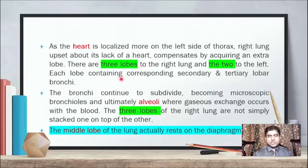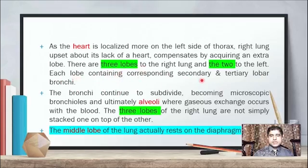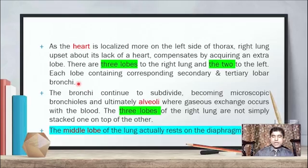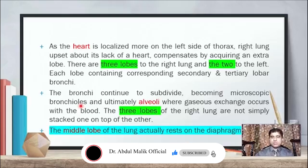There are three lobes to the right lung and two to the left. Each lobe contains corresponding secondary and tertiary lobar bronchi. The bronchi continue to subdivide, becoming microscopic bronchioles — as seen in histology — and ultimately convert into alveoli, where gas exchange occurs between blood and alveoli.